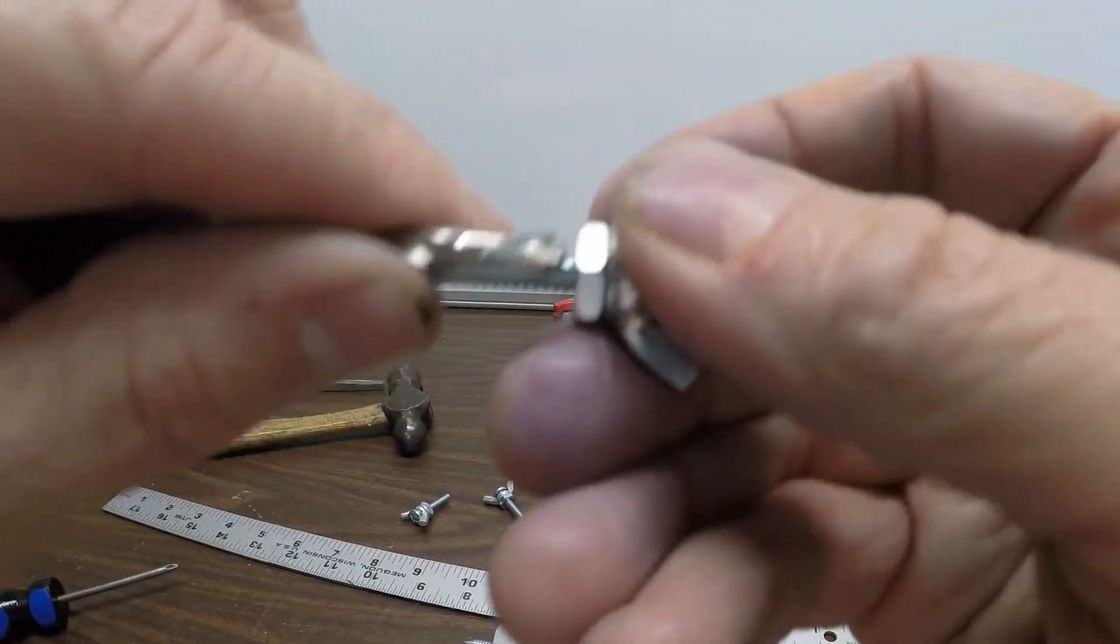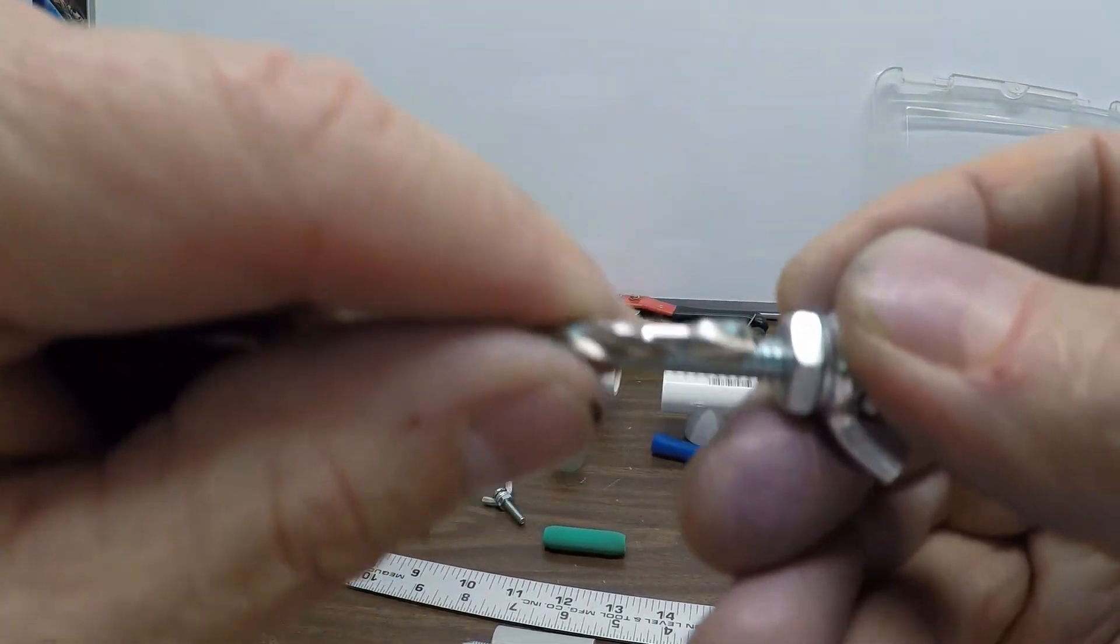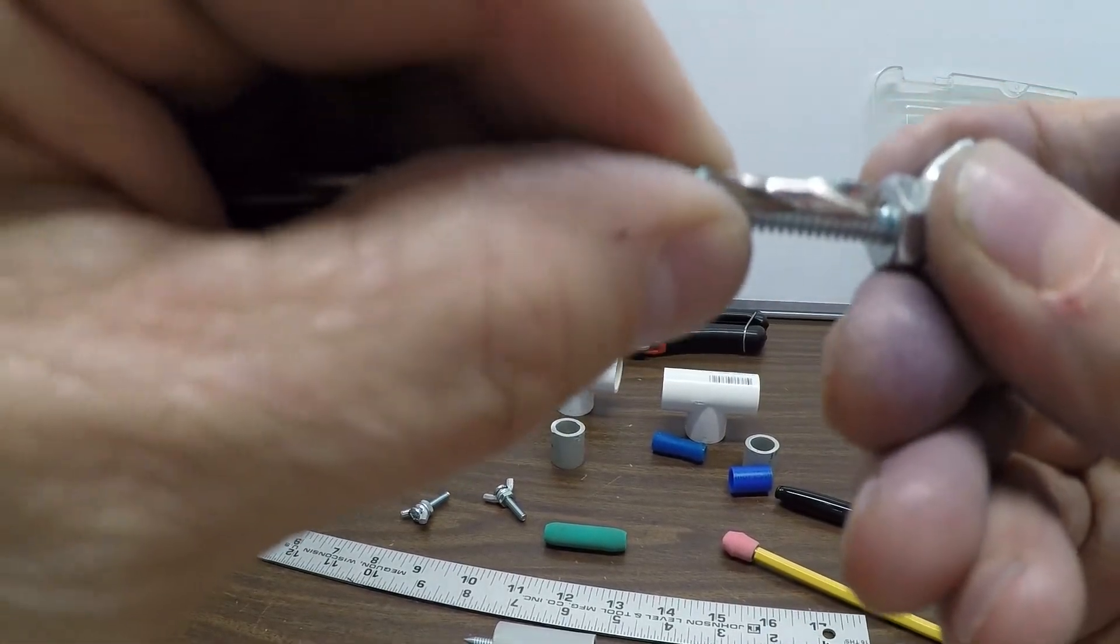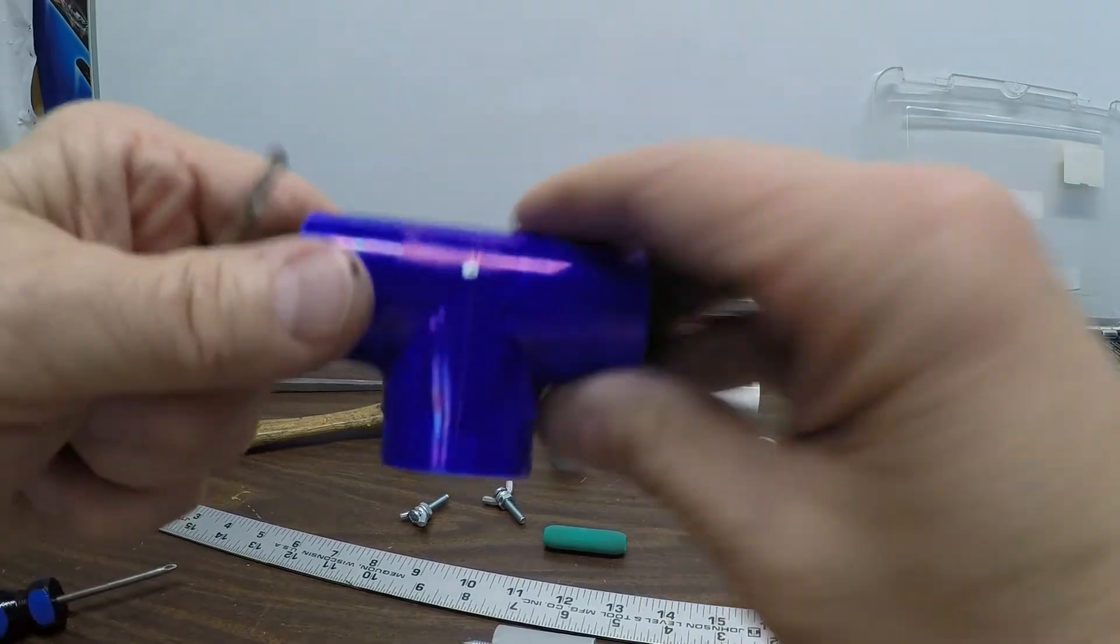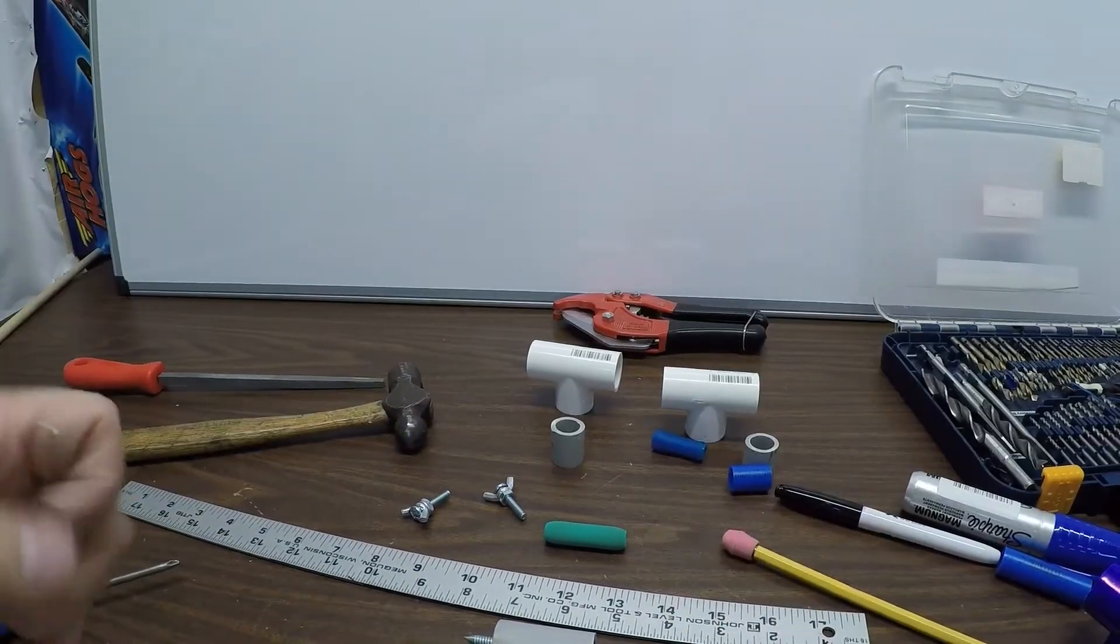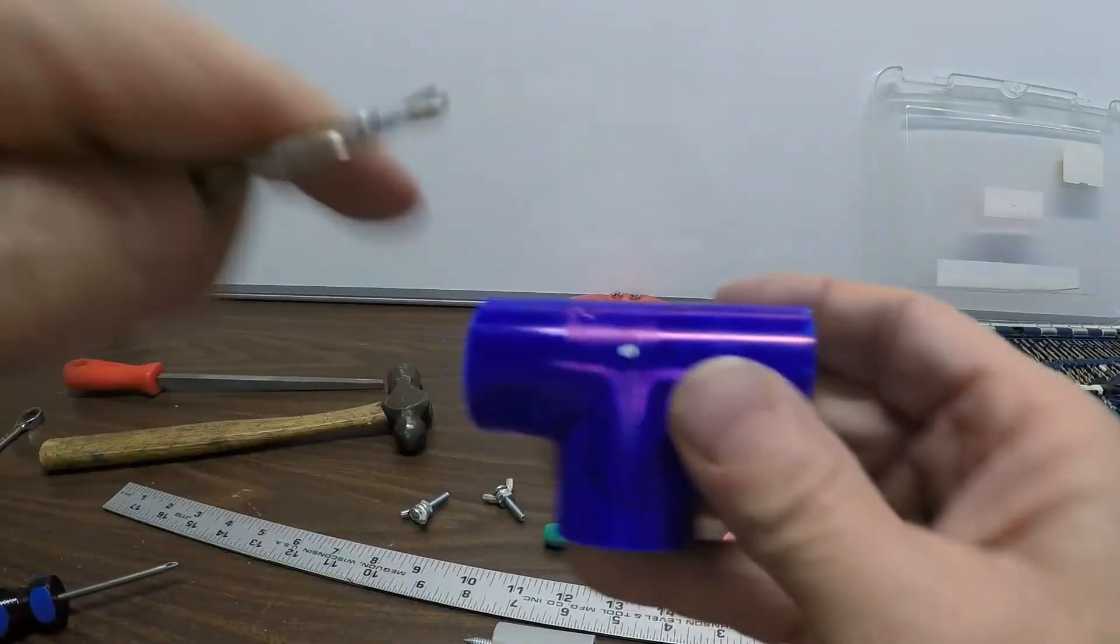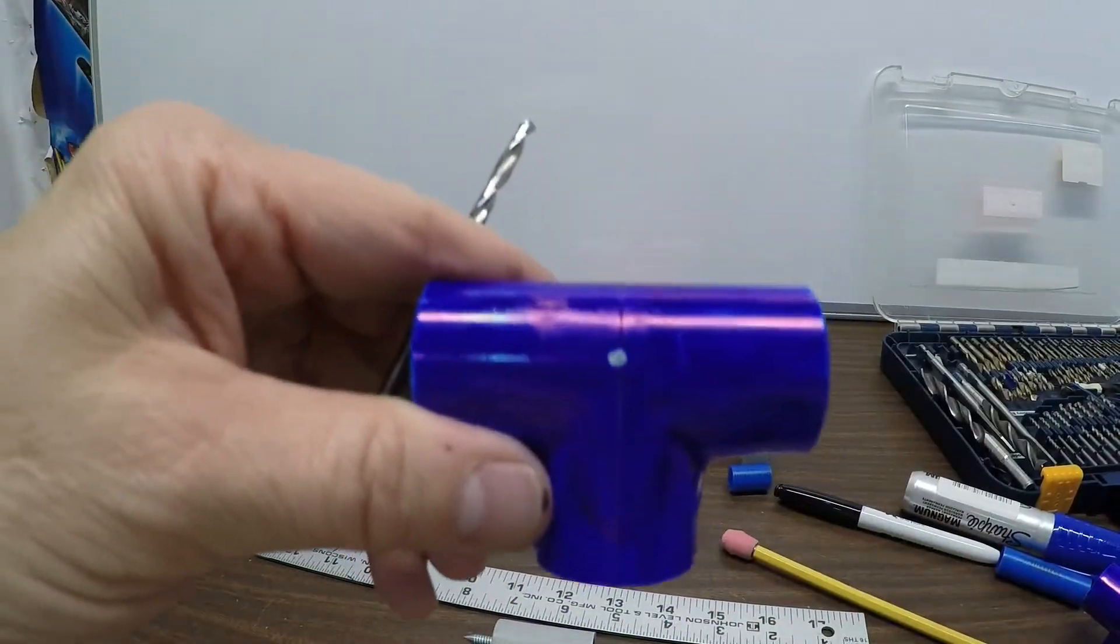So I'm using a 5/32nd drill bit so that the threads will hold through the PVC pipe. And you only want to drill the one side. Because you're going to be coming in contact with the dowel.